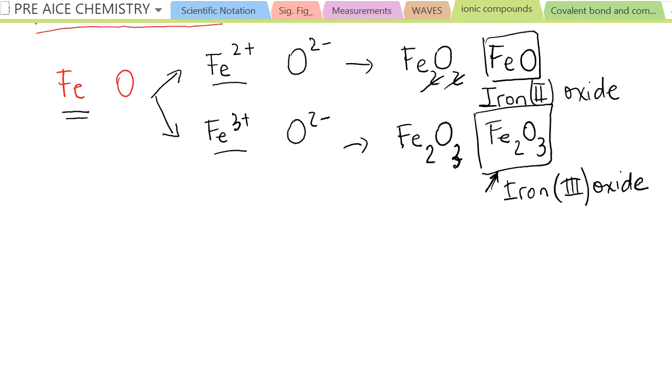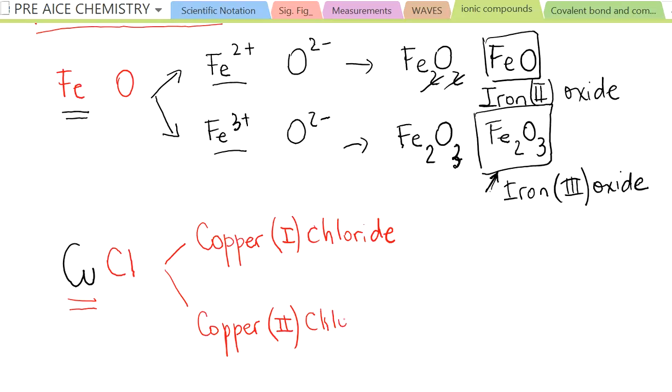For example, let's do an exercise. If I have copper, and also oxide, or we can do it different. Instead of oxide, we can do chloride, Cl. So copper forms two chlorides. Copper(I) chloride and copper(II) chloride. What I want you to do is to work it out yourselves to see if you can come up with the formulas of these two. Okay? So I'm going to pause this now.